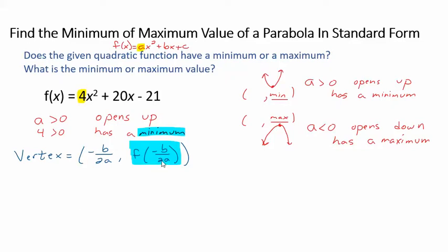So in order to find this minimum we first have to find the x value of the vertex which is negative b, b is 20 over 2 times a which is 4. So that gives me negative 20 over 8 which is negative 2 and 4/8 or negative 2 and a half.